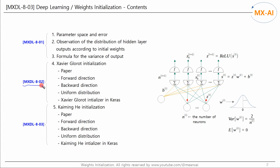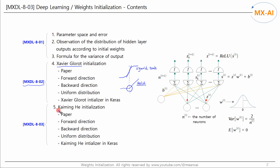In the last video, we looked at the weight initialization proposed by Xavier Glorot and Yoshua Bengio. Xavier Glorot assumes that the sigmoid or hyperbolic tangent activation function is linear near the origin. However, this assumption is not valid for ReLU, because ReLU is definitely a nonlinear function near the origin. In this video, we will see how Kaiming He initializes the weights for the ReLU activation function.